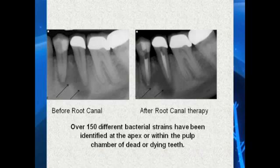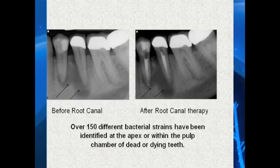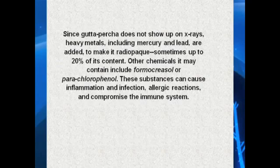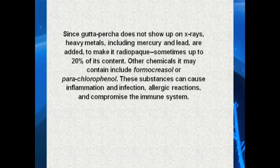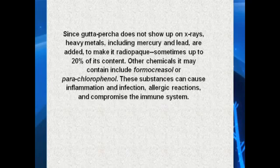Here I have an x-ray on the left of two teeth that have apparently abscessed. On the right, those two teeth have been treated with root canal therapy. You'll notice that the bone around them is still dark. It's assumed that root canal treatment will totally take care of all infection in the bone. Realize that there are over 150 different bacterial strains identified at the tip, apex, or within the pulp chamber of dead or dying teeth. Since gutta percha doesn't show up on x-rays, heavy metals including mercury and lead are sometimes added to make it radio-opaque — sometimes up to 20% of its content. These other chemicals can contain toxins that cause inflammation, infection, allergic reactions, and compromise the immune system.